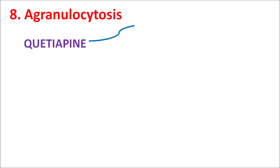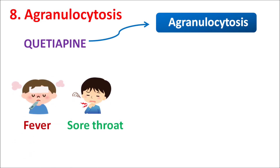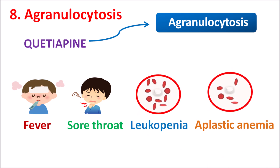The eighth precaution is agranulocytosis. Quetiapine can produce agranulocytosis, similar to clozapine and other antipsychotics. With use of Quetiapine, symptoms such as fever, sore throat, and decreased blood counts leading to leukopenia, aplastic anemia, and neutropenia can be observed. When agranulocytosis develops, it can increase the risk of infections. Therefore, WBC count and absolute neutrophil count should be monitored with long-term use of Quetiapine.